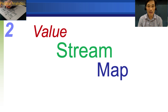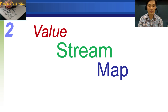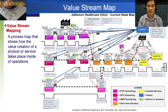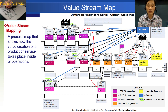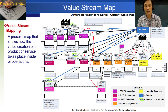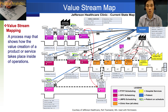Value stream map, or VSM, is one of the best tools to grasp how values are flowing through a process. Value stream mapping is a process map that shows how the value creation of a product or service takes place inside of operations. It takes all the necessary people, processes, information, and inventory and displays them in a flowchart format. By visualizing all elements that go into creating a product or service, organizations can apply lean principles to reduce waste in specific areas of their processes.